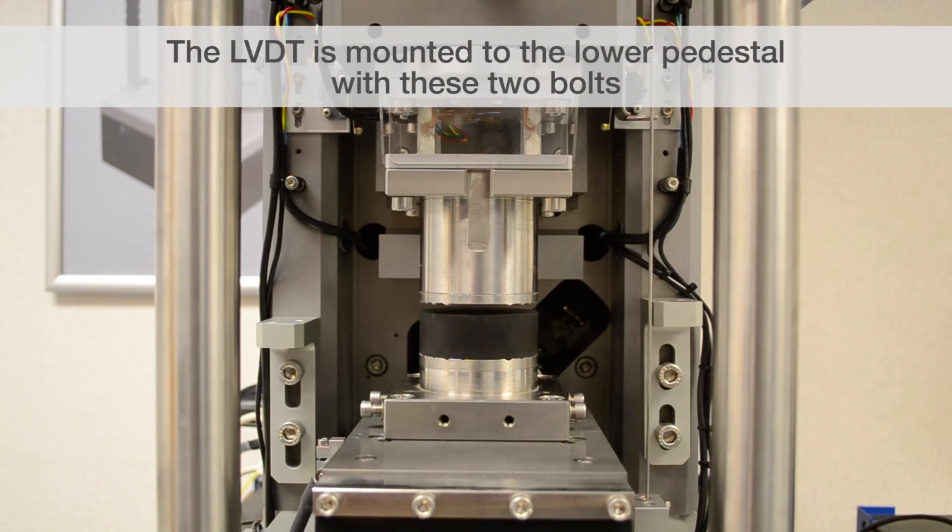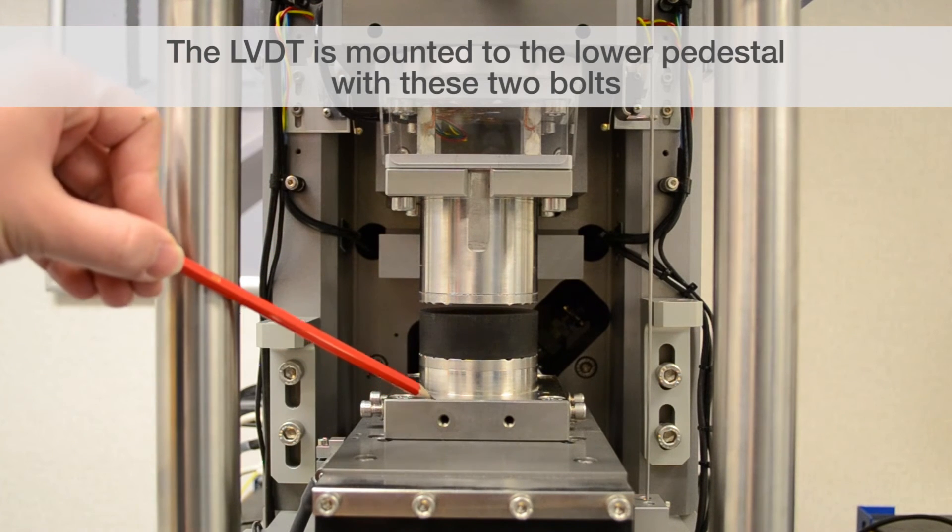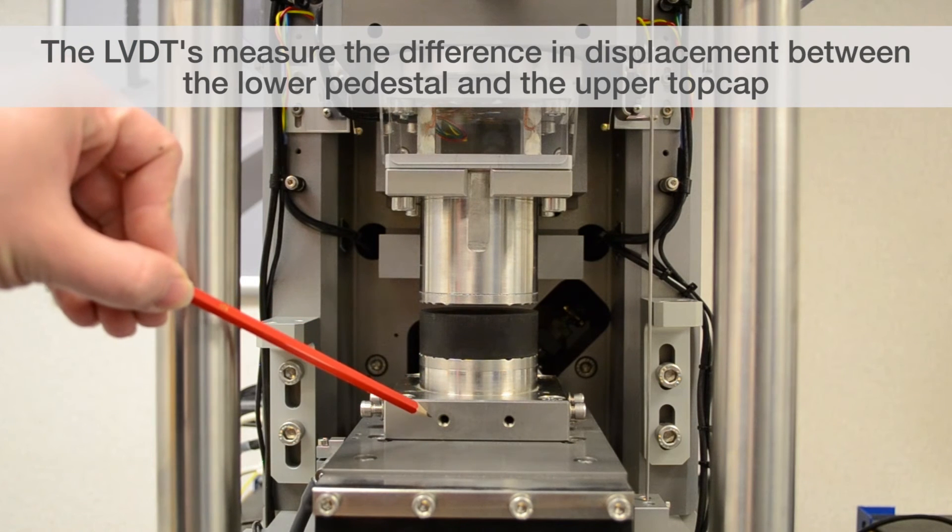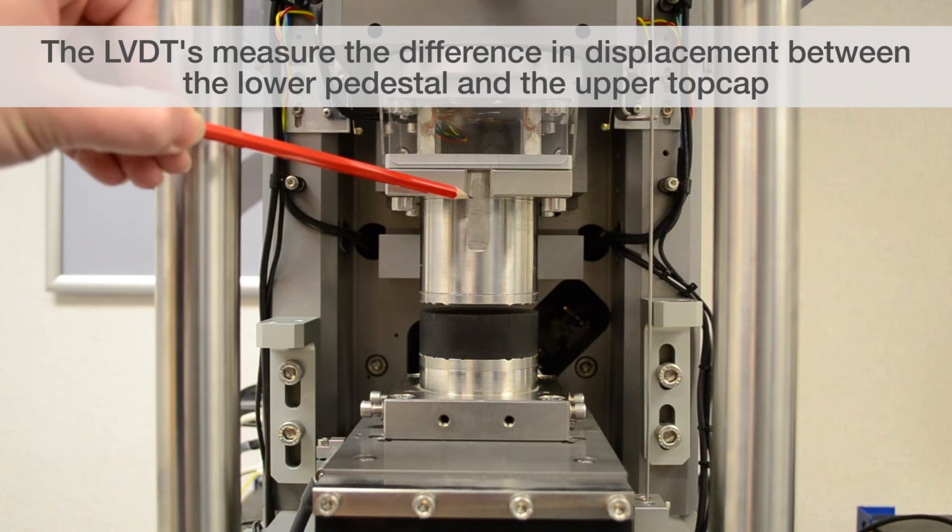The LVDT is mounted to the lower pedestal using these two bolts here and measures directly the difference in displacement between the lower pedestal and the upper top cap.